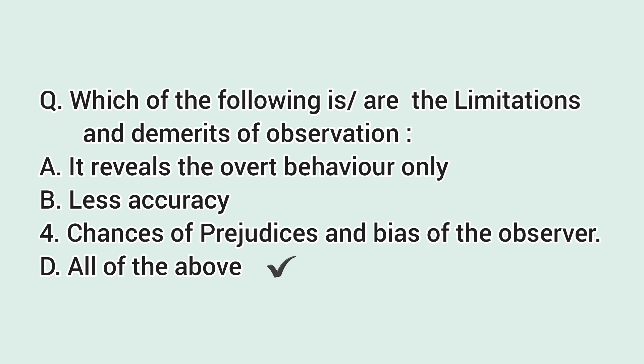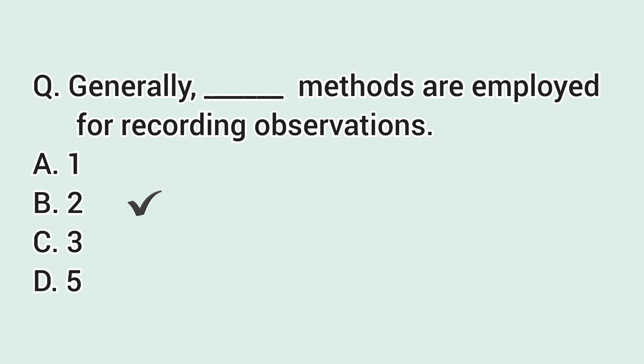It reveals the overt behavior only, less accuracy, chances of prejudices and bias of the observer. Generally, two methods are employed for recording observations - that is recording during the observation and recording immediately after the observation.